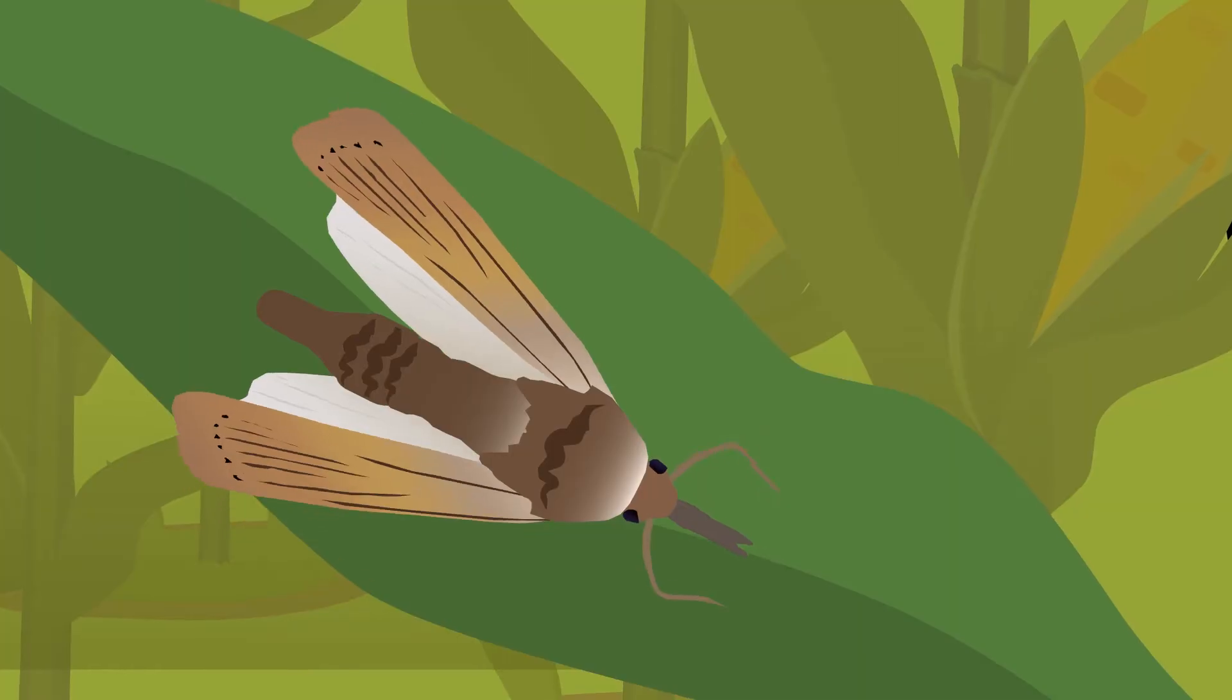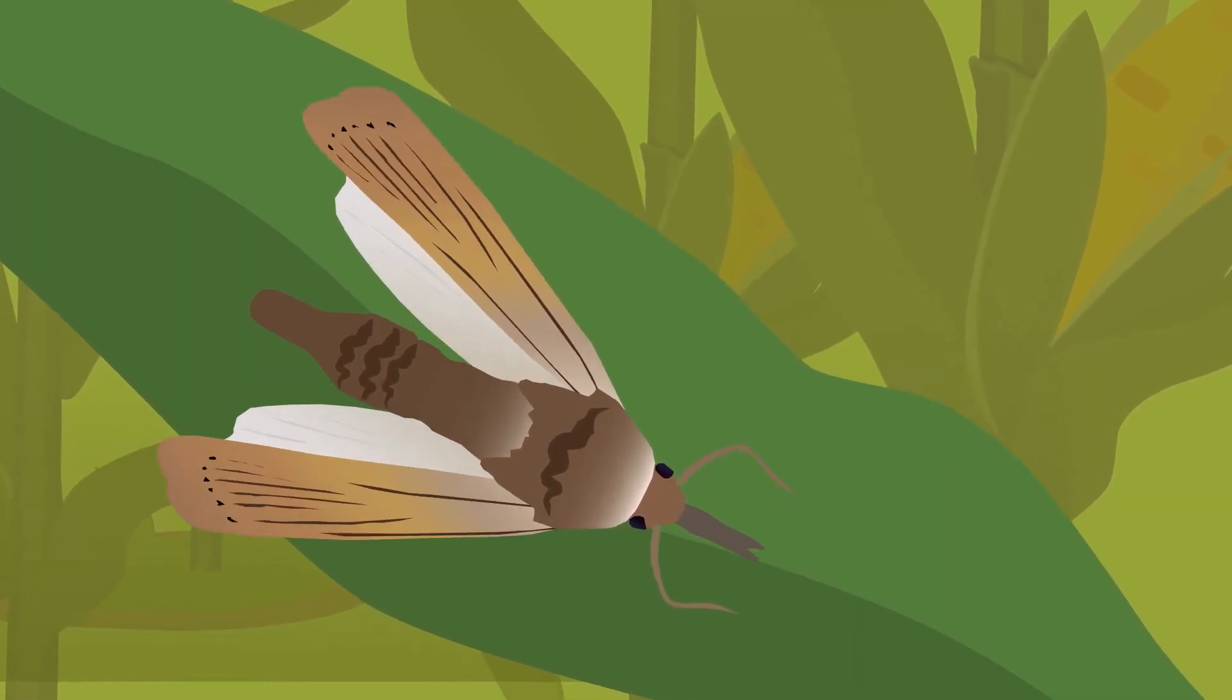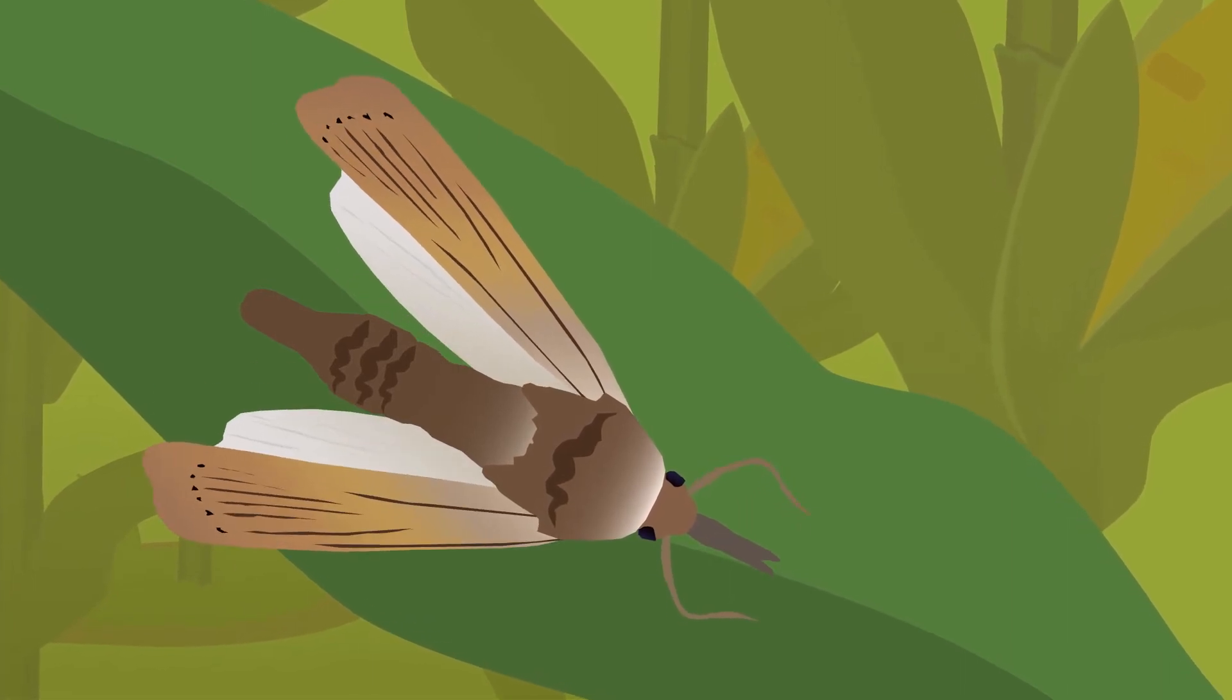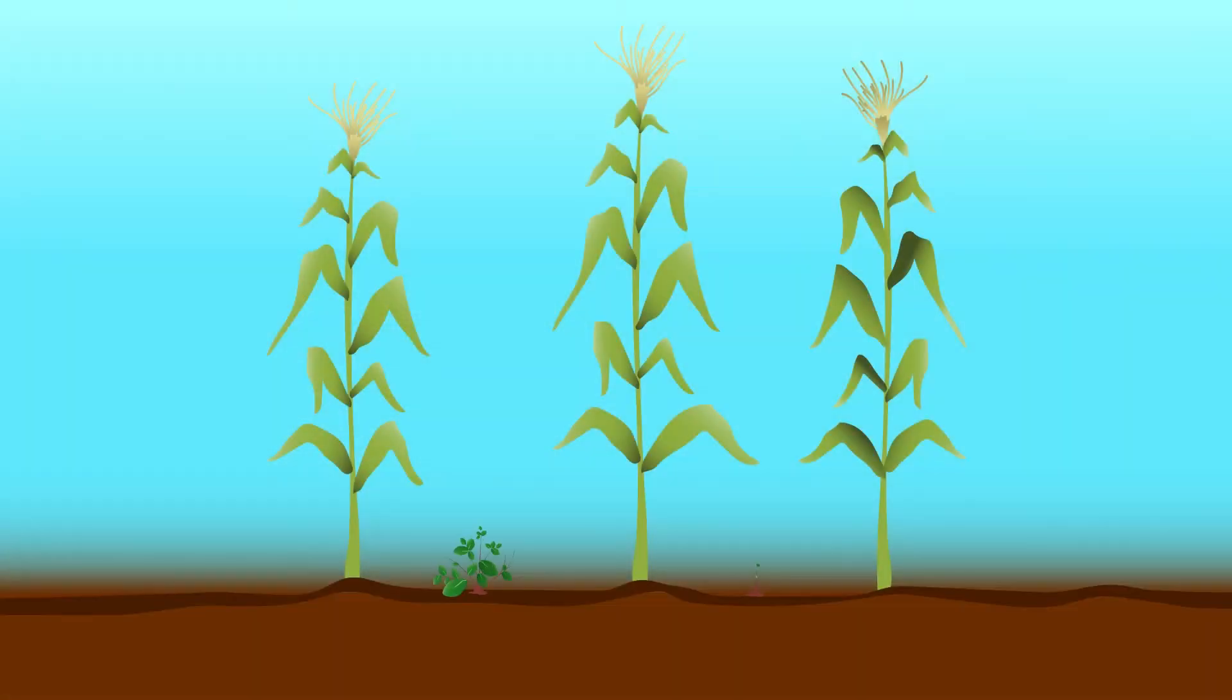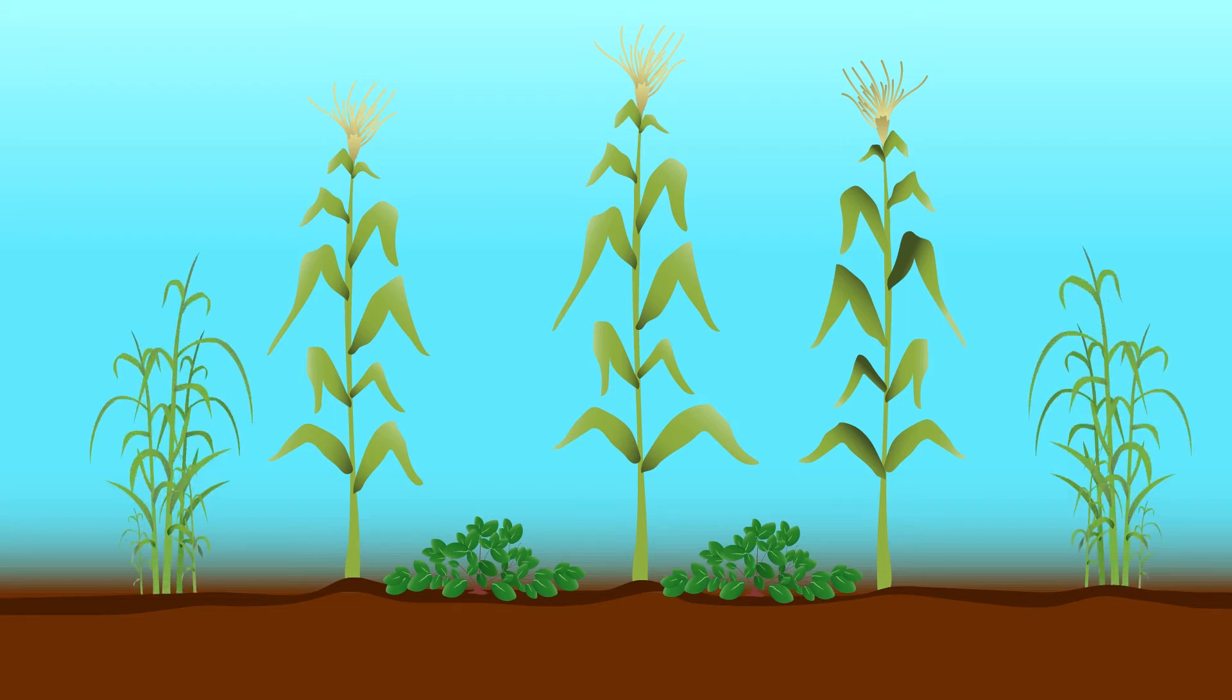One such pest is Chylopartellus, more commonly known as the spotted stem borer moth. This animation will take you through the steps of protecting your field from pests like the stem borers by using a push-pull system.